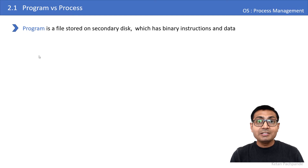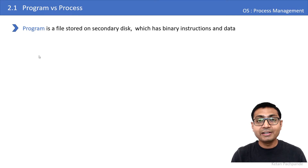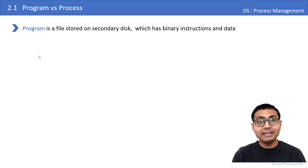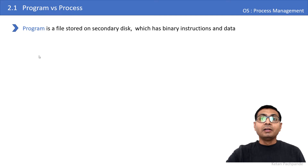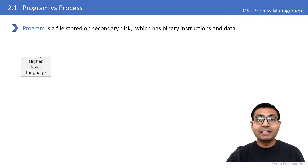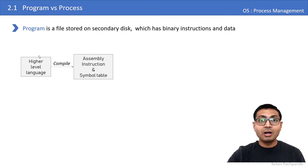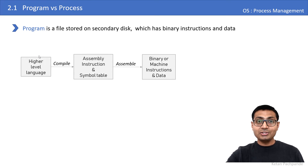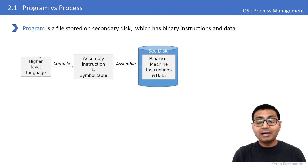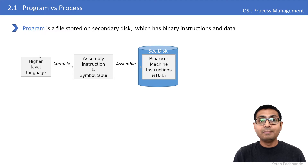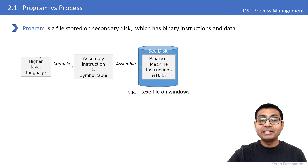So what is a program? A program is nothing but a file which is stored on secondary disk. The speciality of the program file is it contains binary instructions and data that is written by a programmer. When you write a C or C++ program in a higher level language and compile it, assembly instructions and a symbol table are generated. These assembly instructions are then given to the assembler, which converts them into binary instructions and data, collectively stored onto a file on secondary disk — what you call an executable file. For example, in Windows operating system you call that file a .exe file, which stands for executable file.